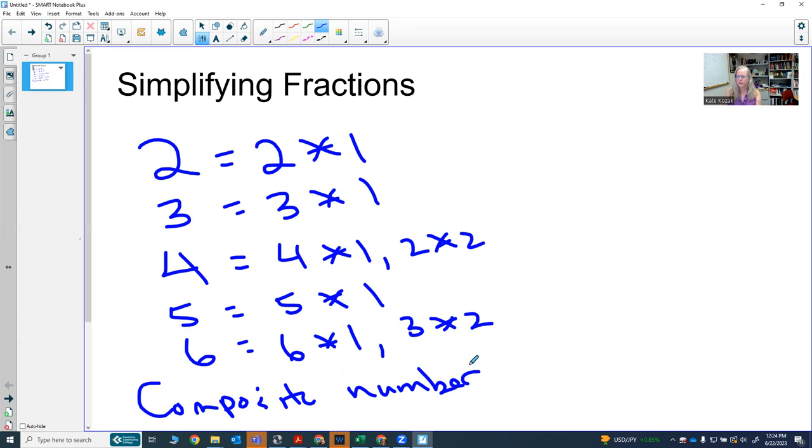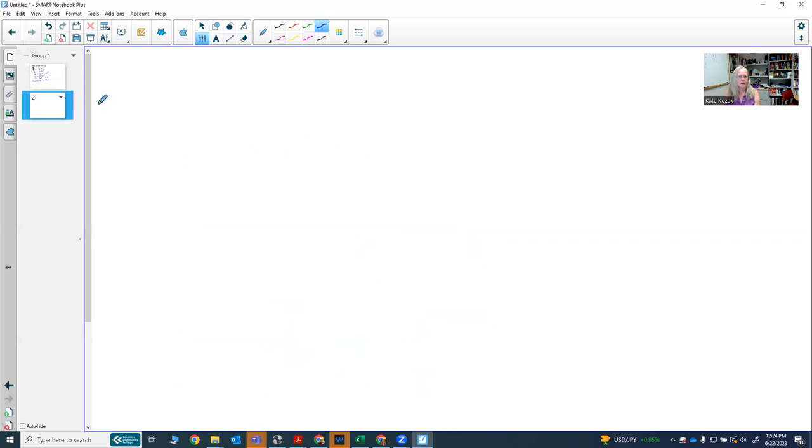So think about, can you think of any other numbers that may actually be considered prime numbers? Let's see if you can also think of some numbers that are composite numbers.